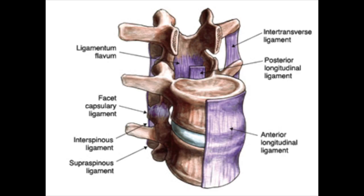All these vertebrae are connected through an extensive series of ligaments. Running up the anterior portion of the vertebral body is the anterior longitudinal ligament, which prevents spinal hyperextension. The posterior longitudinal ligament runs down the posterior portion and limits spinal flexion. We also have the ligamentum flavum connecting the lamina and pedicles posteriorly, the intertransverse ligament connecting the transverse processes, the interspinous ligament connecting the spinous processes, and the supraspinous ligament running over the tops of the spinous processes.